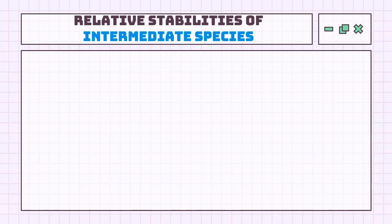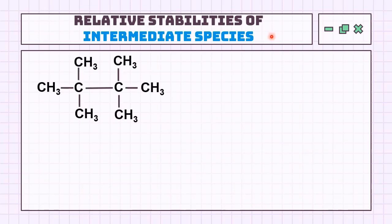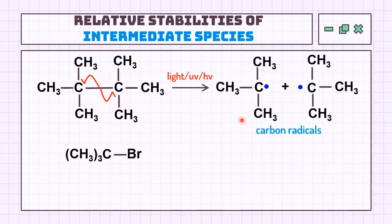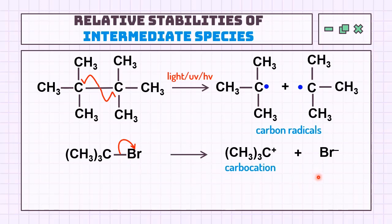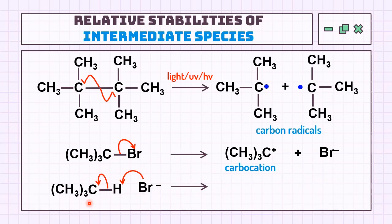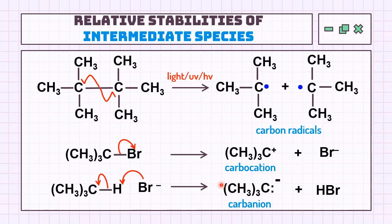We will discuss the relative stabilities of three carbon intermediate species. The first is formed from the homolytic cleavage of carbon, known as carbon radicals. Second, carbon with partial positive and bromine with partial negative undergo heterolytic cleavage, forming a carbocation and a bromine anion. The third species, where a more negative species takes an atom from a more positive molecule, involves breaking the bond between carbon and hydrogen, transferring all electrons to the carbon, resulting in a carbanion, plus HBr as a small molecule.